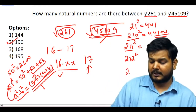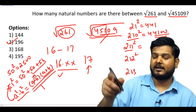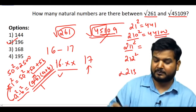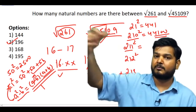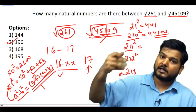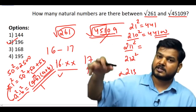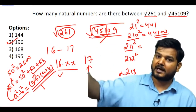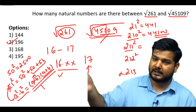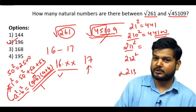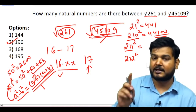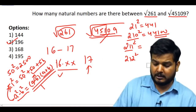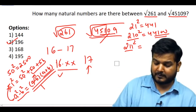Going further: 212² = 211² + 211 + 212 = 44521 + 423 = 44944. Adding ~400 each step, we need to cross 45109. Adding again: 213² ≈ 44944 + 425 = 45369, which exceeds 45109. So √45109 = 212.something.